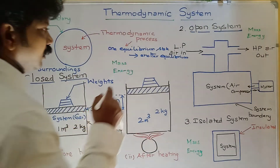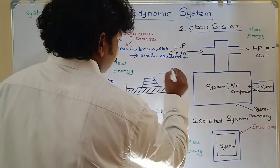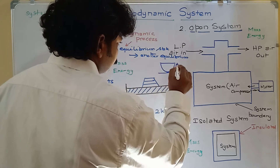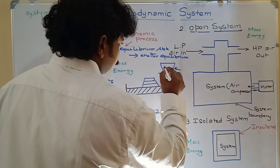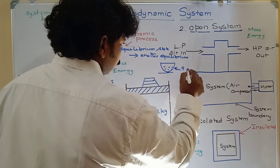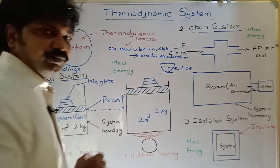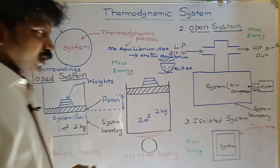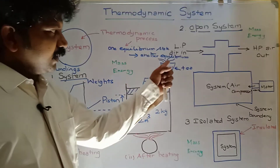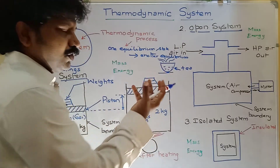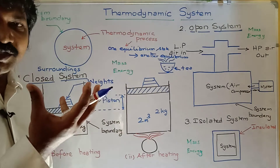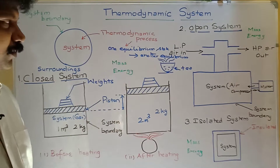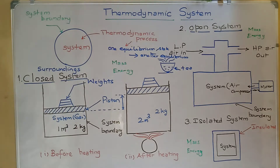Another simple example is a cup of tea. In a cup of tea, heat energy transfer and also mass energy transfer takes place. This is also one thermodynamic process, making it an example of a thermodynamic system.